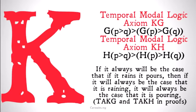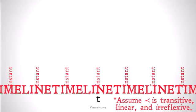We have two of these axioms now because we have two strong tense modifiers, as there are two tense predicates, as opposed to just one. Here is a direct example: if it always will be the case that if it rains it pours, then if it always will be the case that it is raining, then it will always be the case that it is pouring. We're going to take these as TAKG and TAKH when using them in proofs.